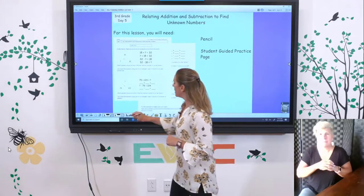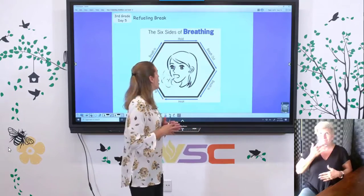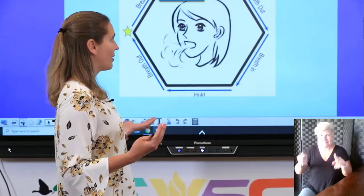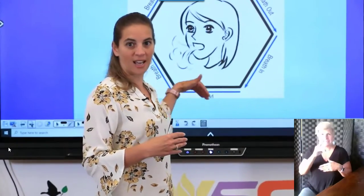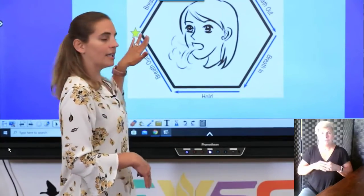Before we get started, we're going to do a quick refueling break today. This is one of my favorites — we're going to do our six sides of breathing. What I love about this is that this six-sided shape is a hexagon, which is one of our math terms. We're going to go around our six sides three times. You're going to take a deep breath in, hold it, and then let that deep breath out. So sit up nice and tall for me.